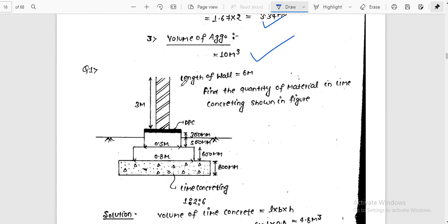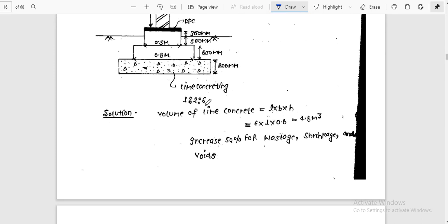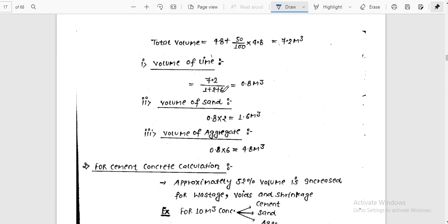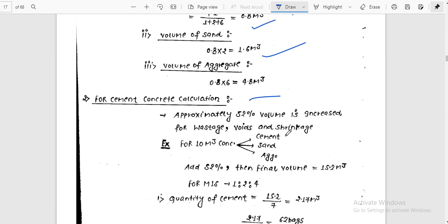Similarly, suppose length of wall is 6 meter. Find the quantity of material in lime concrete shown in figure. Lime concrete is 1 to 2 is to 6. Volume of lime concrete is 6 into 1 into 800 mm thickness, which is 0.8 meter, equals 4.8 meter cube. But 50% will increase because of waste. So volume of lime becomes 7.2. The ratio is 1 to 2 is to 6, so 7.2 divided by 1 plus 2 plus 6. Lime is 0.8 meter cube, sand is 1.6 meter cube, aggregate is 4.8 meter cube. I need to add 50% increment.